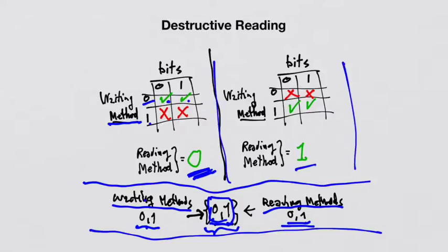If we use method one for reading and the writing method was method zero, then the reading act will destroy the information of the value of the bit. But if there is a match between the method that was used for reading and the method that was used for writing, then the reading will be correct. In fact, this fact of destructive reading is a feature of quantum physics.